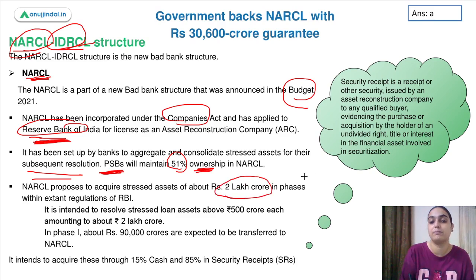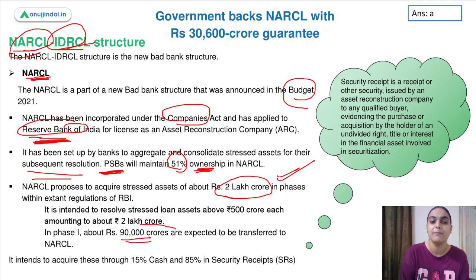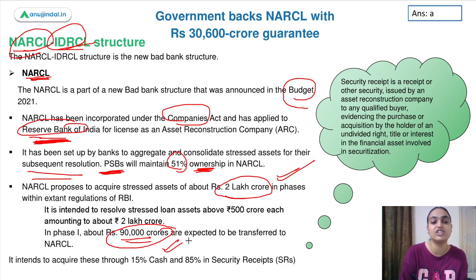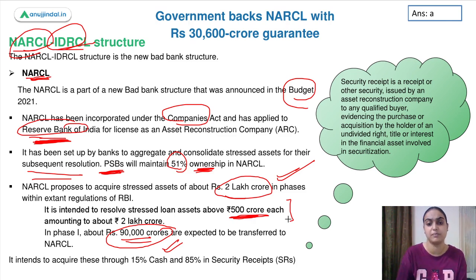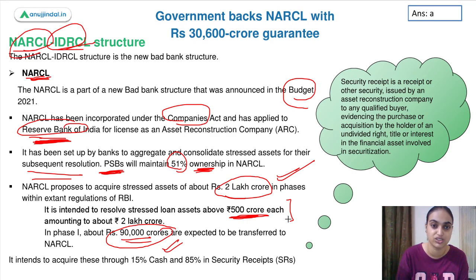The NPAs expected to be transferred to NARCL are up to 2 lakh crores, to be resolved in phases. NARCL will specifically deal in stressed loan assets above 500 crores. Existing asset reconstruction companies usually deal in smaller amounts, but where the loan amount is above 500 crores, NARCL will handle those cases. There is a lot of exposure to loans above 500 crores and NARCL will be able to resolve those stressed assets.